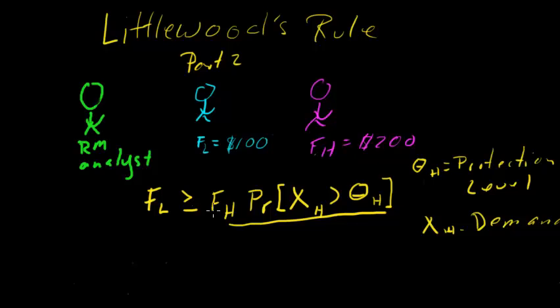And on the right-hand side, you have an expected value. We'll talk a little bit more about what this means. But we have the fare, the $200, times some probability of that fare being sold. The difference that we have here now is that we have theta. And in this case, the variable is theta. We're going to find theta that makes this inequality hold. We're going to keep on changing theta. We're going to lower theta in this case until the inequality no longer holds. And that's going to be our answer. That's how many seats we're going to save for the higher fare customer.